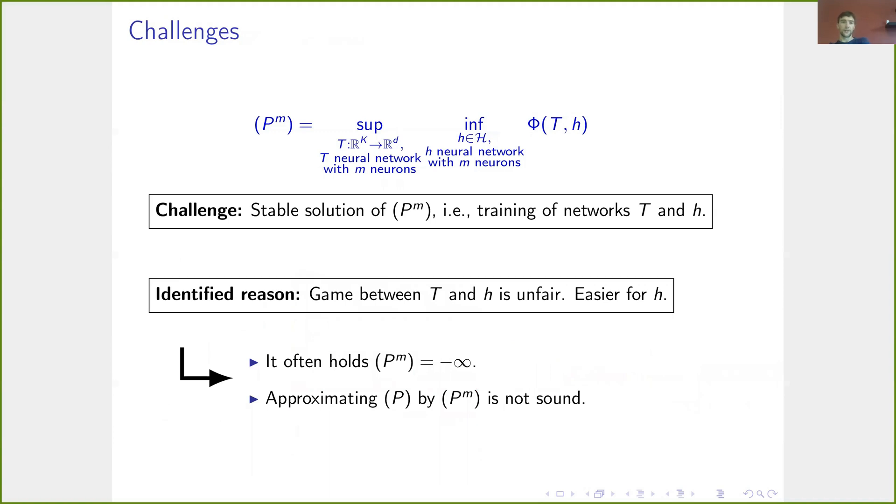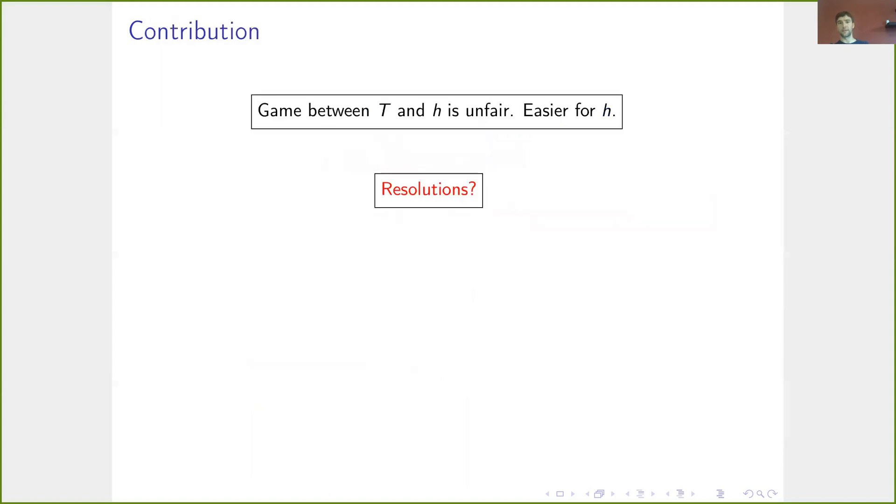We find one reason for this instability, which is that inherently this neural network approximation isn't really well defined. In game-theoretic terms, the game is a lot easier for h in many situations, and it often even holds that P^m is simply minus infinity. Since P is well defined, it's not always minus infinity. This just means that the neural network approximation P^m of P is not justified in any sense.